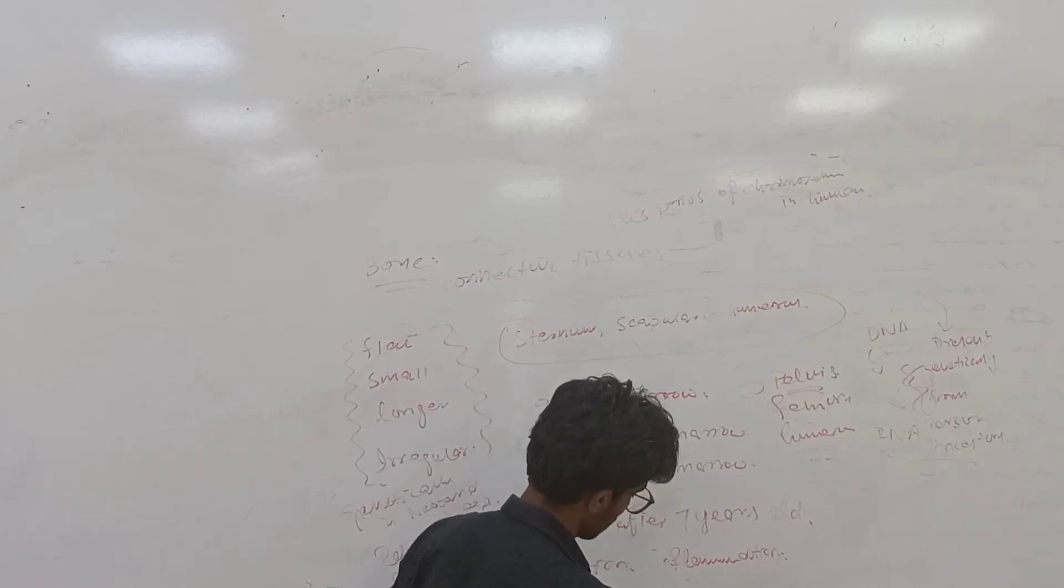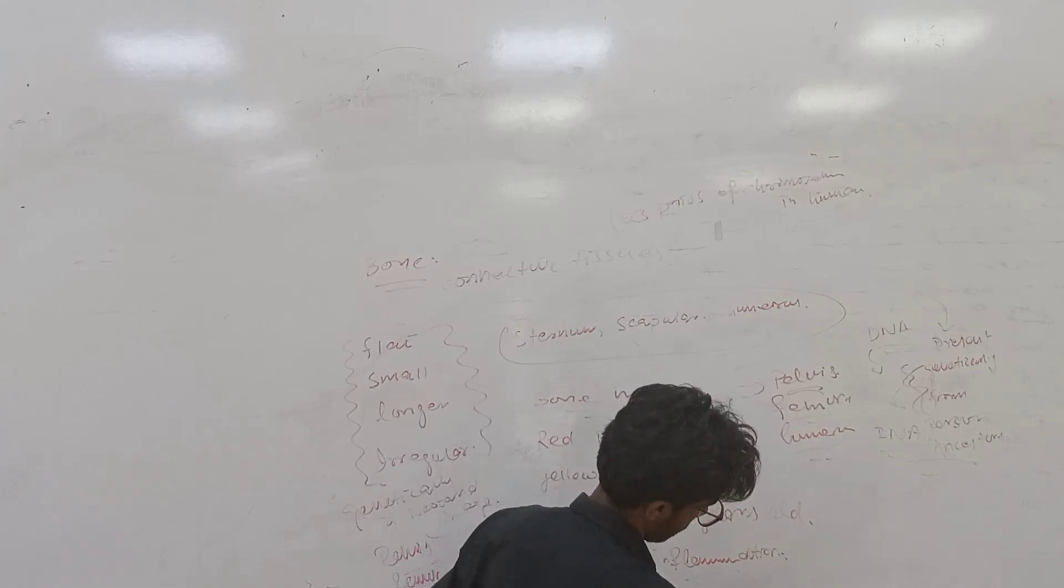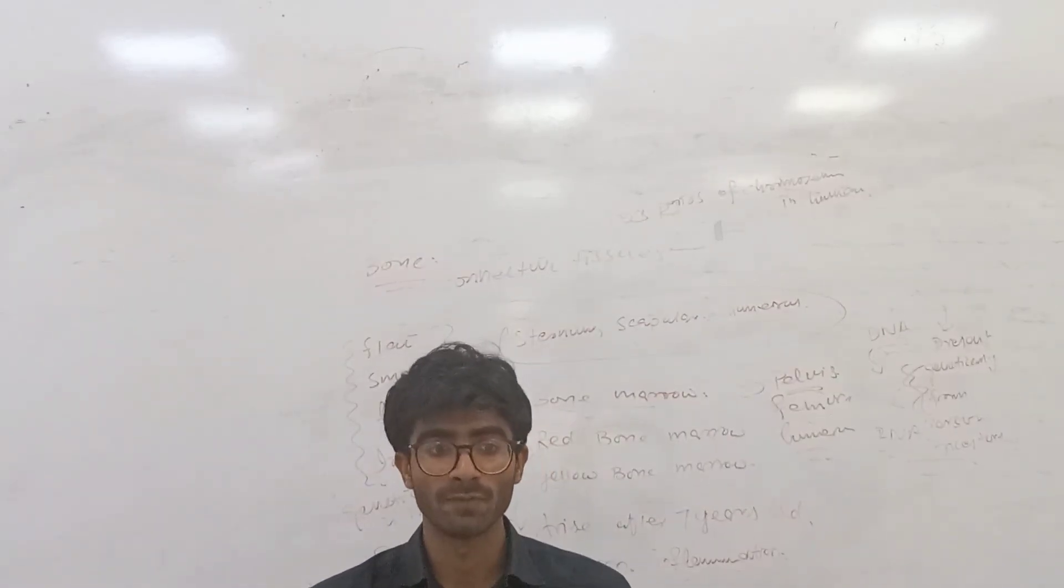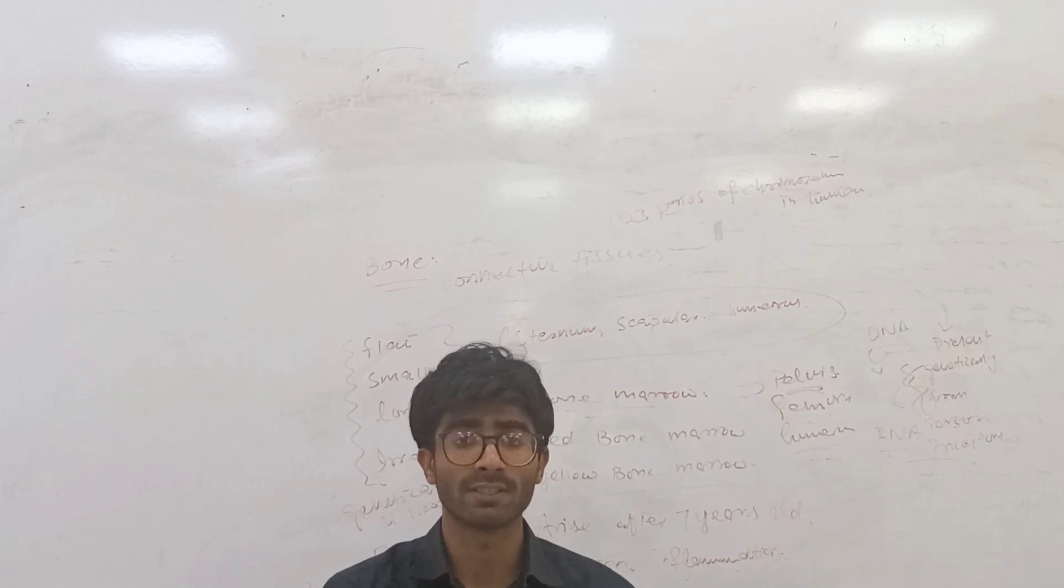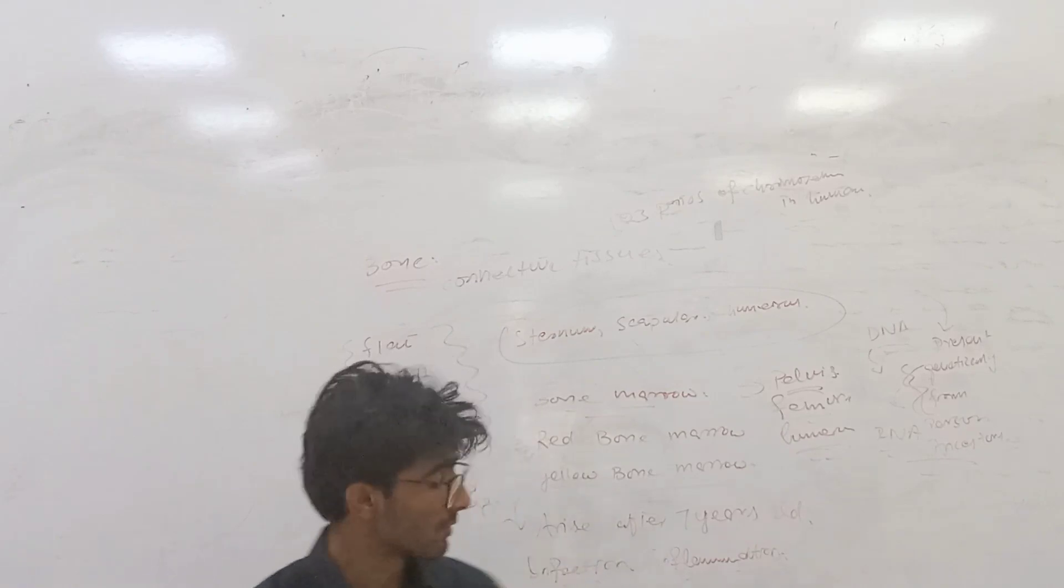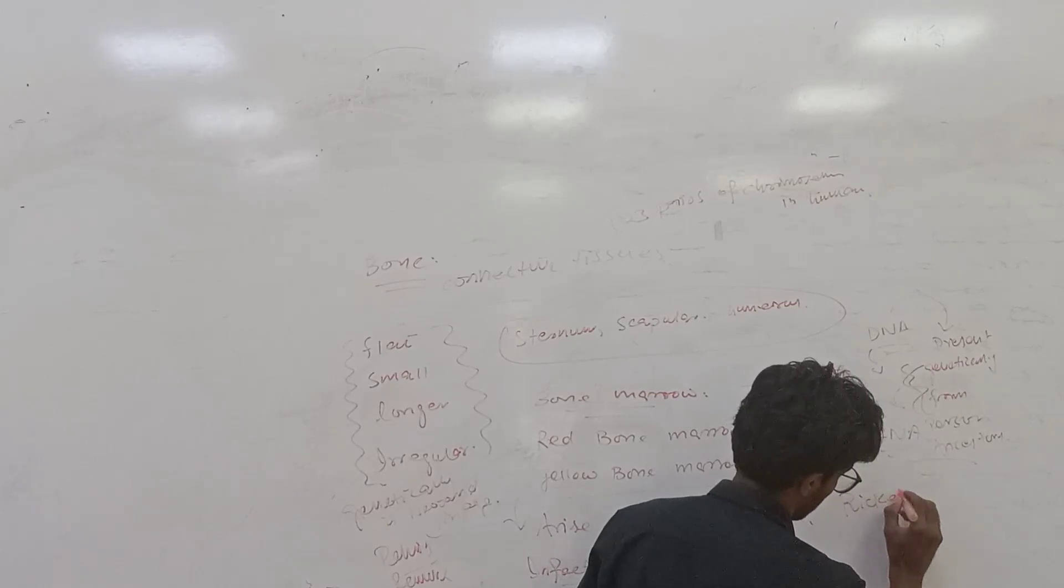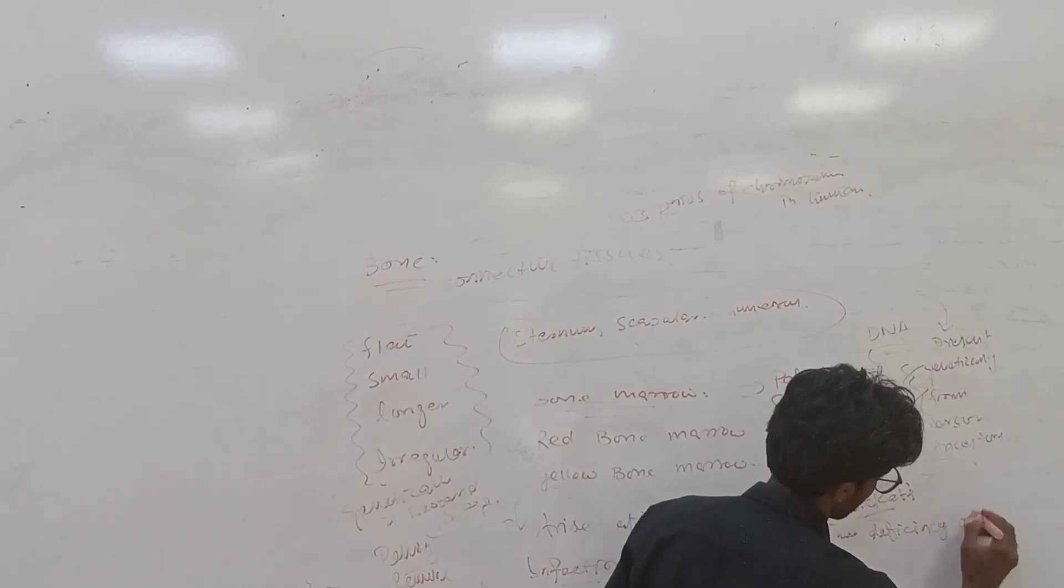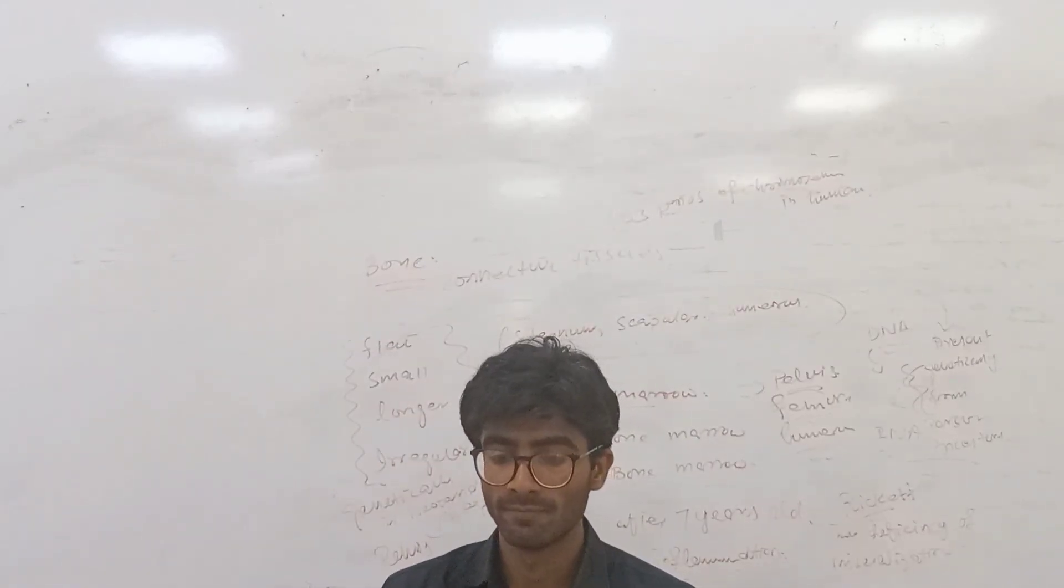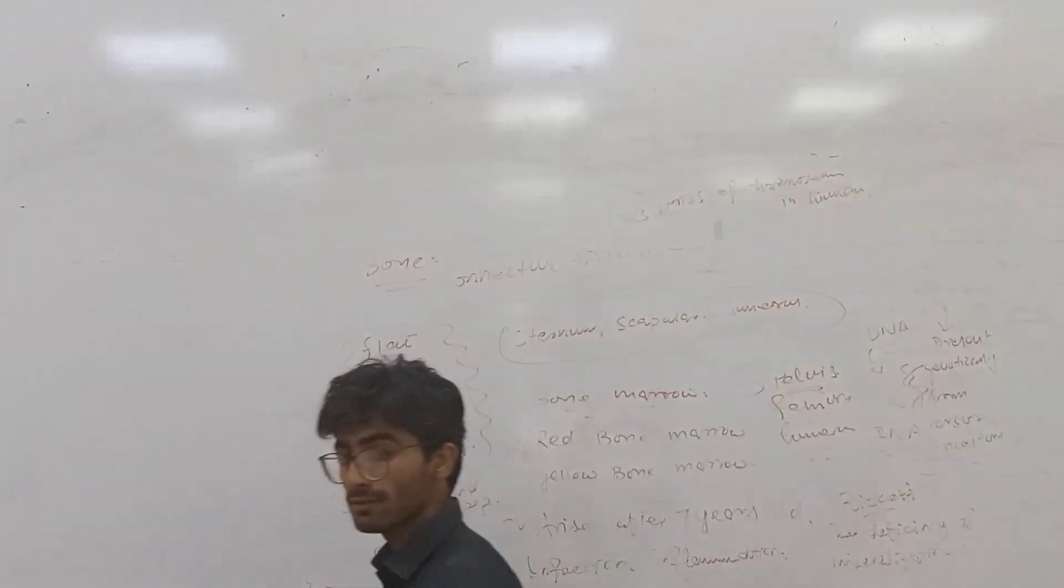Dislocation of the joint from one place to another place causes infection and inflammation, for example in shoulder joint or knee joint. Another condition is rickets. Sometimes due to pressure, natural or mechanical pressure on the bone, the size of the ligament increases. This affects the bone. The deficiency of mineralization in bones is known as rickets.